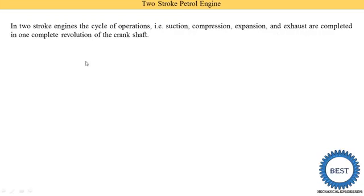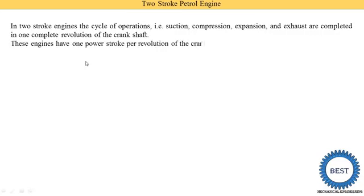One stroke means the distance from TDC (top dead center) to BDC (bottom dead center). So two strokes means the piston moves from TDC to BDC and back from BDC to TDC, completing the cycle. In a two-stroke engine there is no separate suction or compression stroke; both sides of the piston work simultaneously, and the engine has one power stroke per revolution of the crankshaft.